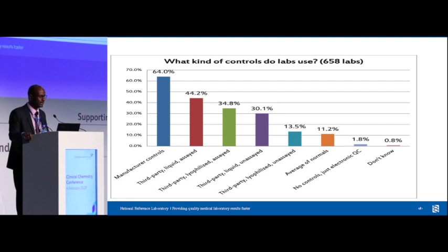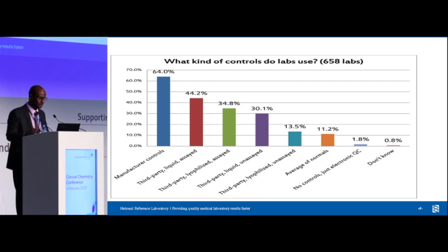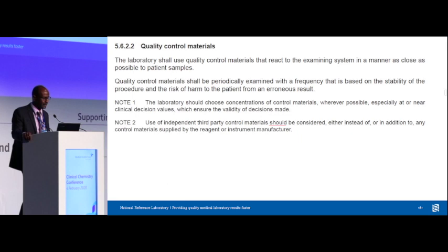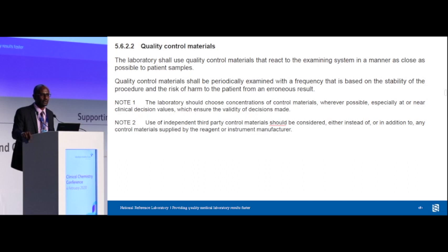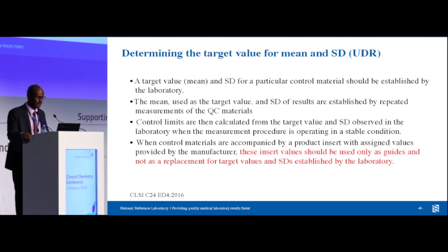The next survey question: what kind of controls do you use? Up to 64% use manufacturer controls and 44% use third-party controls. There is a push for third-party controls, but it is not a 'shall' yet. The ISO 5622 standard says the use of independent third-party control materials 'should be considered' — it is recommended but you won't be cited for not using it. The next ISO standard hopefully coming in the next two years may change this to a 'shall,' which could mean significant costs for laboratories.